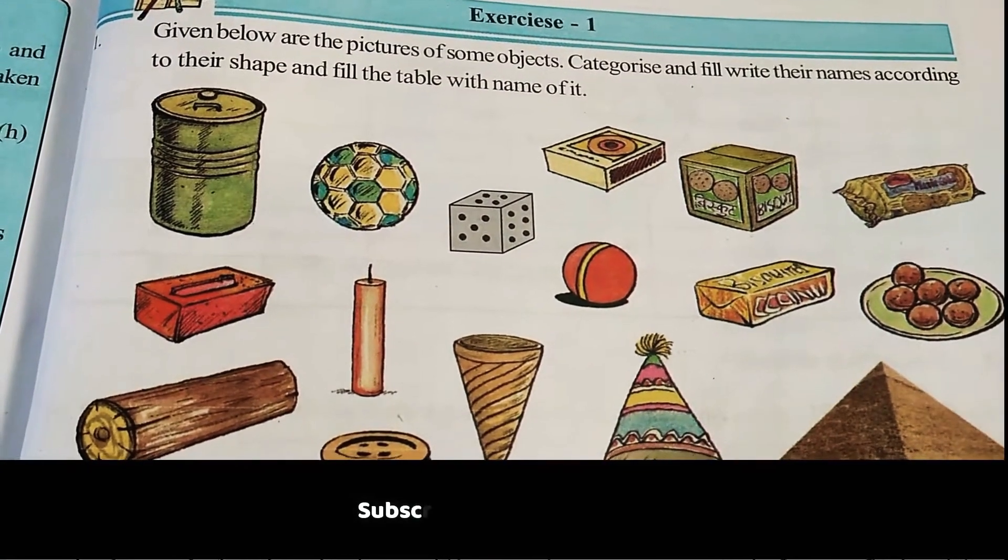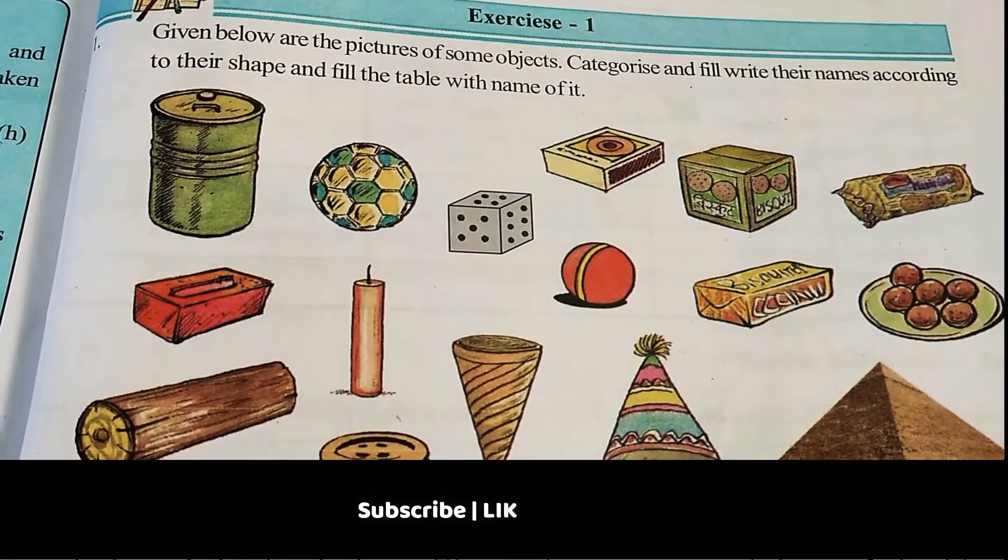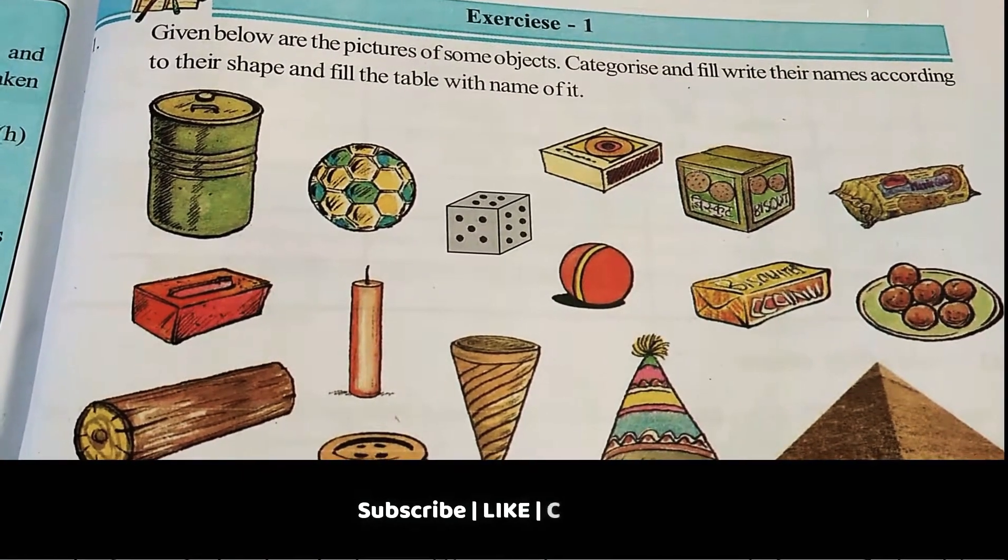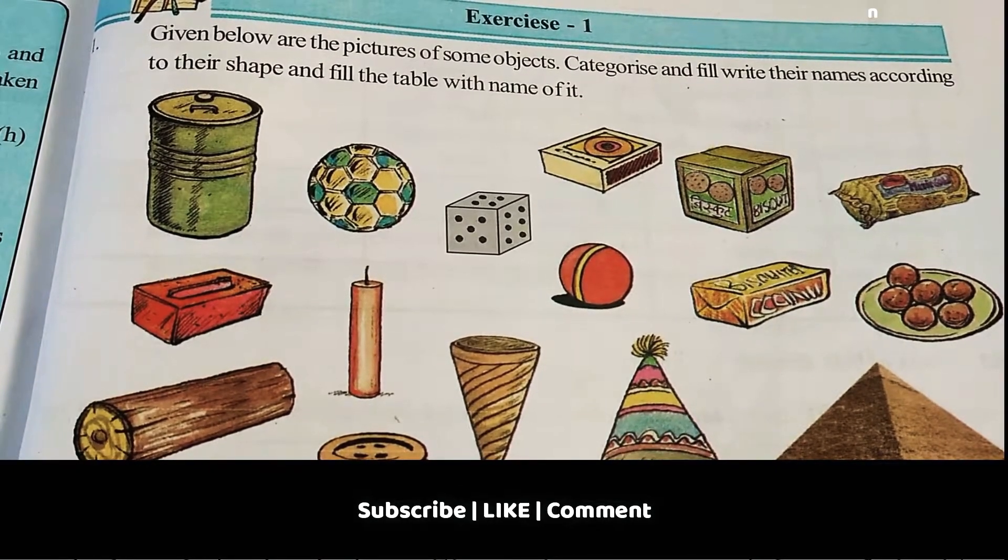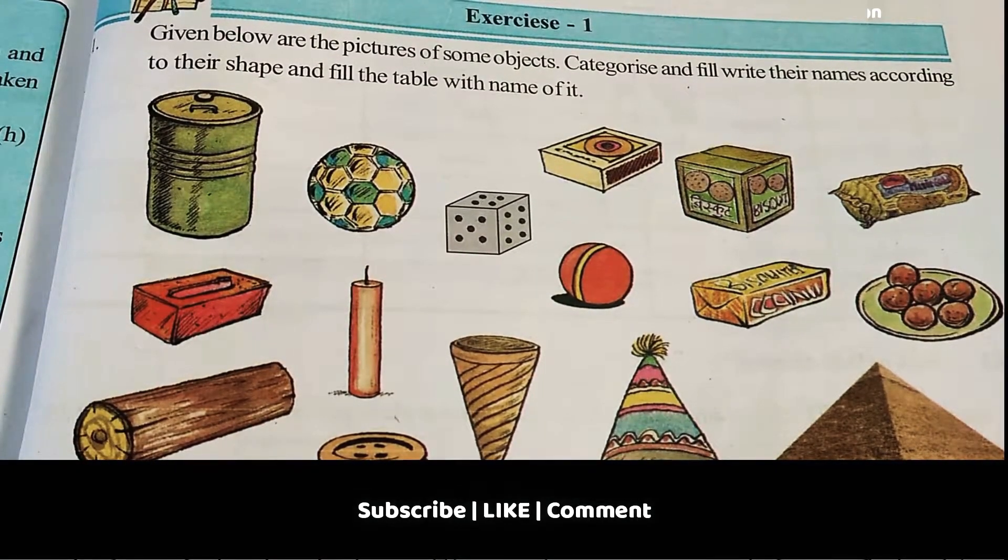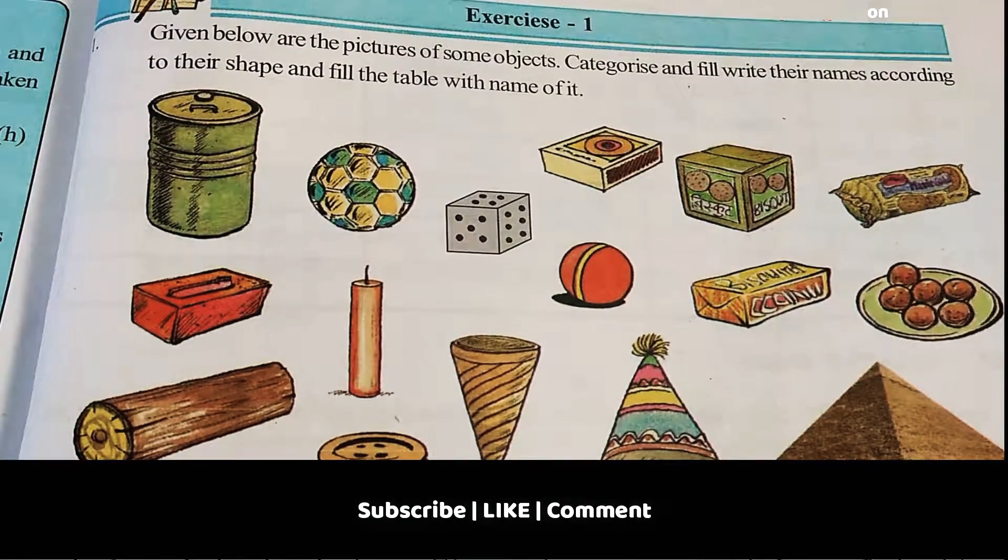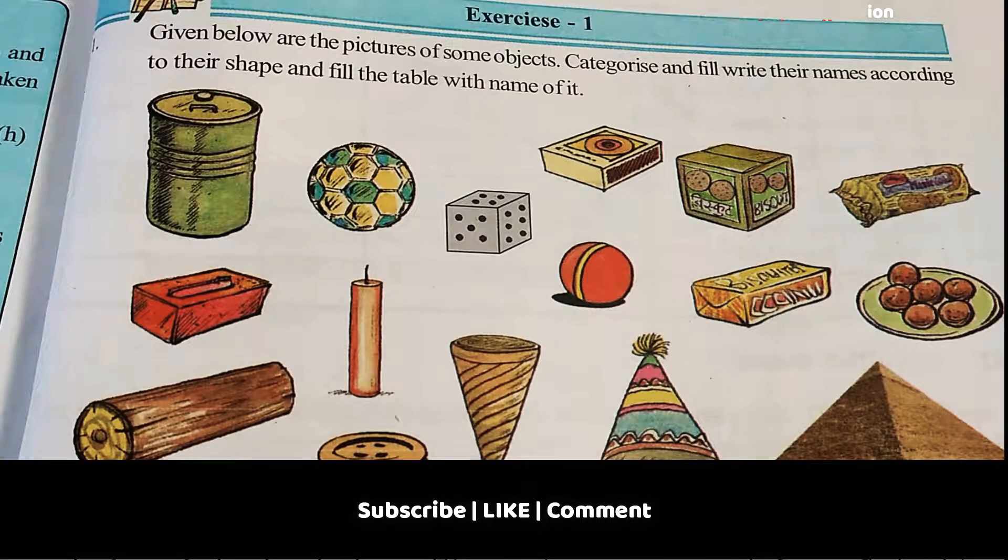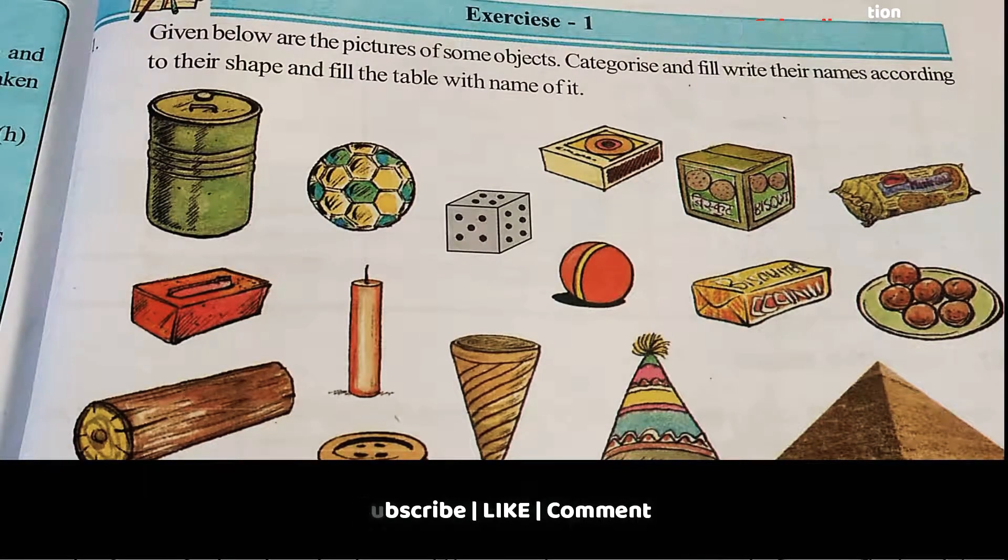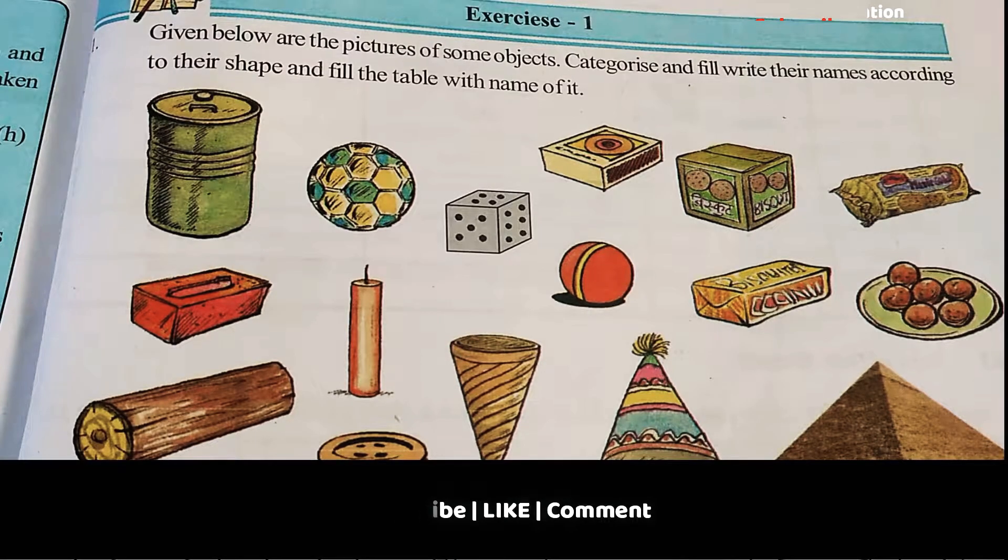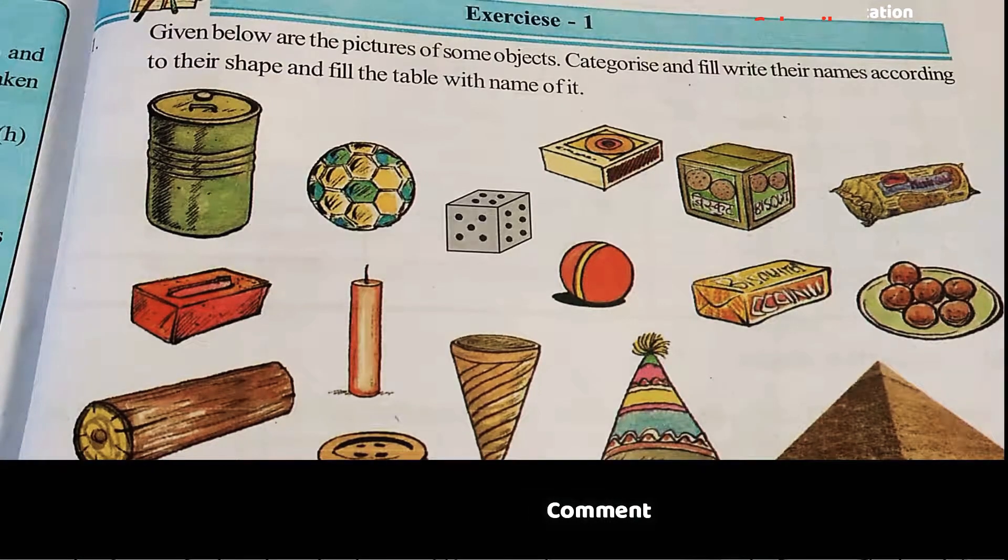Hello viewers, in this module we will discuss the solutions for Exercise 1 on understanding 3D and 2D shapes. Before discussing 3D and 2D shapes, you need to know some objects that exist in our lives which are solids or hollow. They have certain shapes that come from mathematical geometrical shapes. 2D means only two dimensions.